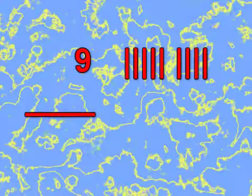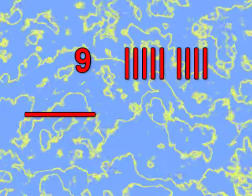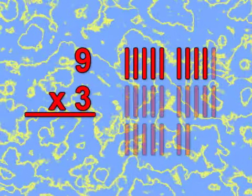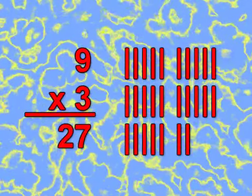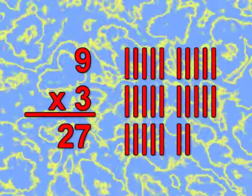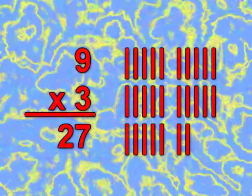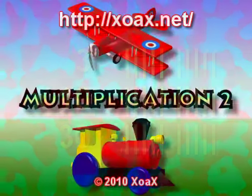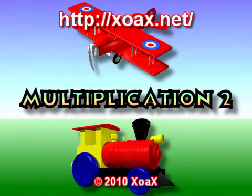9 times 3 equals 27. 3 times 10 equals 30. 9 times 2 equals 18.